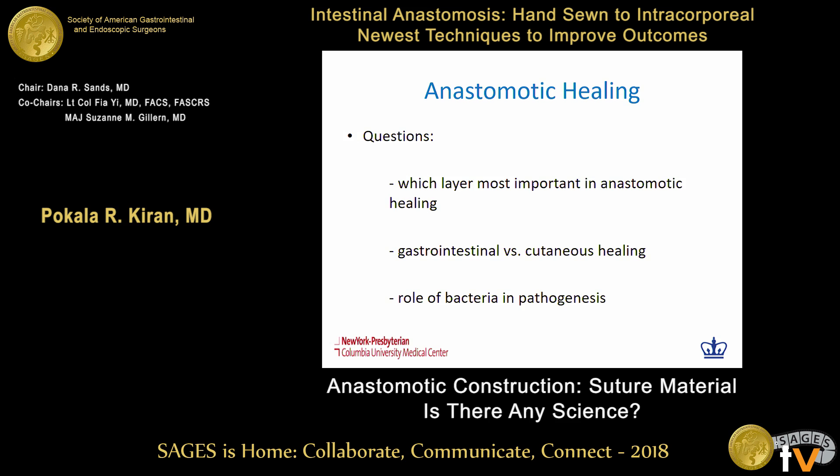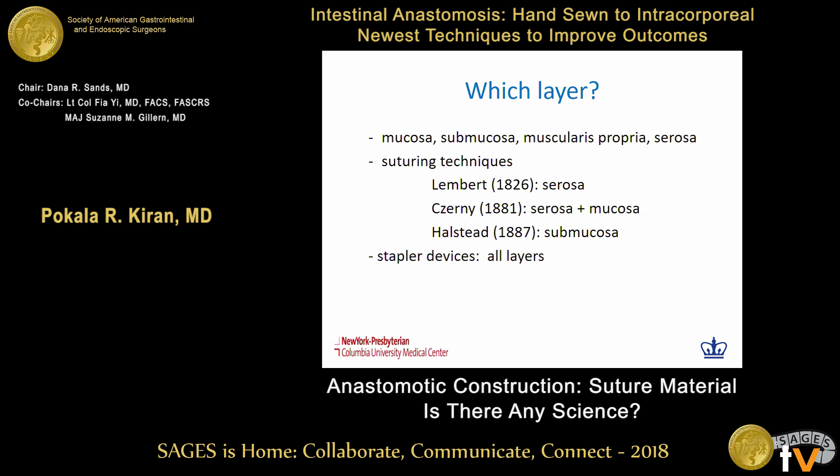When looking at anastomotic healing, the three things that may be important when we consider the type of suture material include which layer is most important, whether healing of the gastrointestinal tract differs from the skin, and what is the role of bacteria in pathogenesis. All the layers of the bowel wall seem to be important. We are all aware of the Lembert sutures, which consist of the seromuscular layers described in the 1800s. Zerni subsequently described full thickness suturing of the bowel wall, and Halsted in 1887 showed that the submucosa was the most important part.